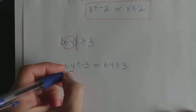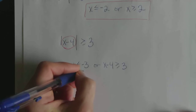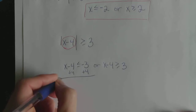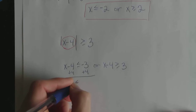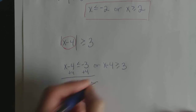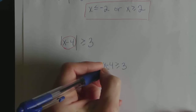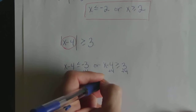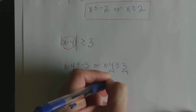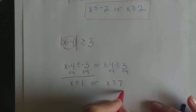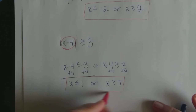Now we're not done — we need to solve for x. Adding 4 to both sides: on the left inequality, x ≤ 1; on the right inequality, x ≥ 7. So our solution is x ≤ 1 or x ≥ 7.